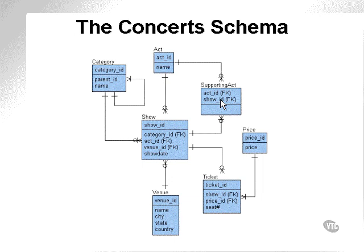Another join involves supporting ACT and ACT, where the supporting ACT table contains a duplicate of the ACT ID but represents a supporting act of a specific act. The supporting ACT table is a resolution of a many-to-many join between the ACT and SHOW tables — specifically a meaningful third normal form many-to-many join resolution entity, because it's called supporting ACT rather than ACT underscore SHOW. Obviously we can also set up joins with ticket and price, or even set up joins for the whole table set.